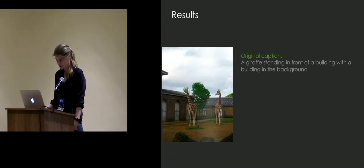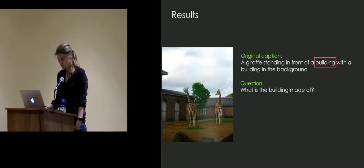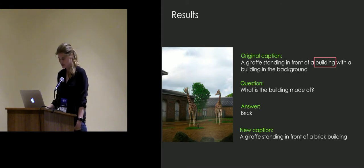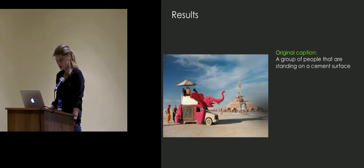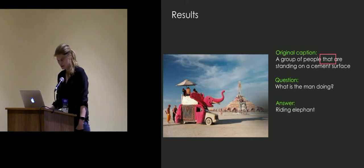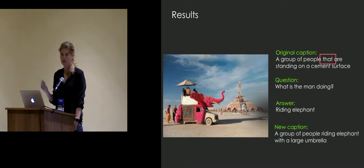Some results: an original caption 'a giraffe standing in front of a building with a building in the background' — the decision maker was not happy with the word 'building', asked 'what is the building made of?', the human answered 'brick', and the new caption becomes 'a giraffe standing in front of a brick building.' Another example: 'a group of people standing on a cement surface' — not happy, question is 'what is the man doing?', answer 'riding an elephant', new caption: 'a group of people riding an elephant with a large umbrella.' These become new training examples.